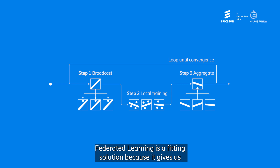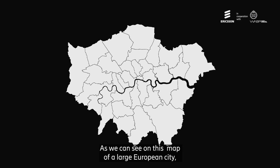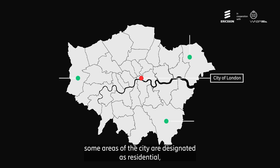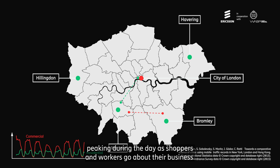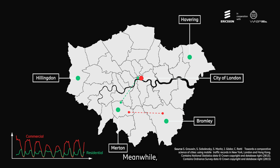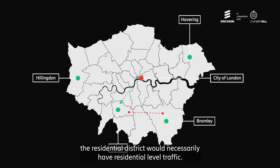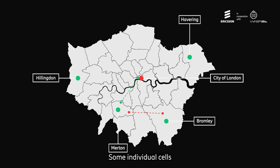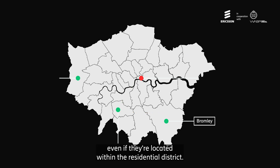For this particular problem, federated learning is a fitting solution because it provides privacy guarantees. As we can see on this map of a large European city, some areas are designated as residential while others are commercial. In commercial areas, traffic tends to peak during the day as shoppers and workers go about their business, while in residential areas traffic peaks in the evenings as people return home. Importantly, not all cells in a residential district will necessarily have residential-level traffic — some individual cells may have characteristics more typical of a commercial area.